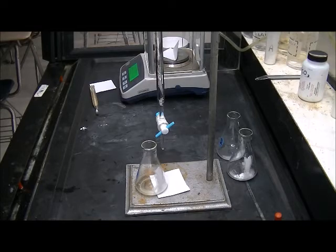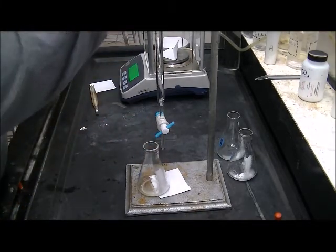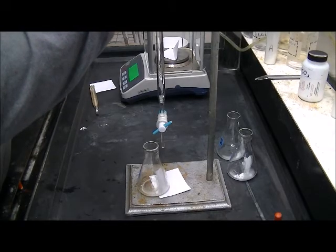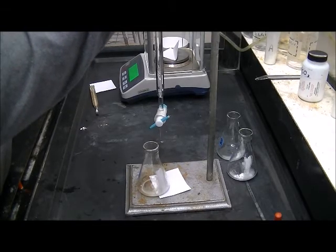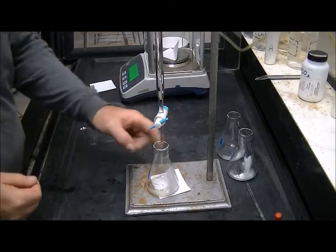One thing I want to point out when I'm doing this titrating is I don't want that tip down where it will hit the flask. So I'll just move the burette up a little bit so that when you're swirling you don't hit the end of the burette and possibly break it.